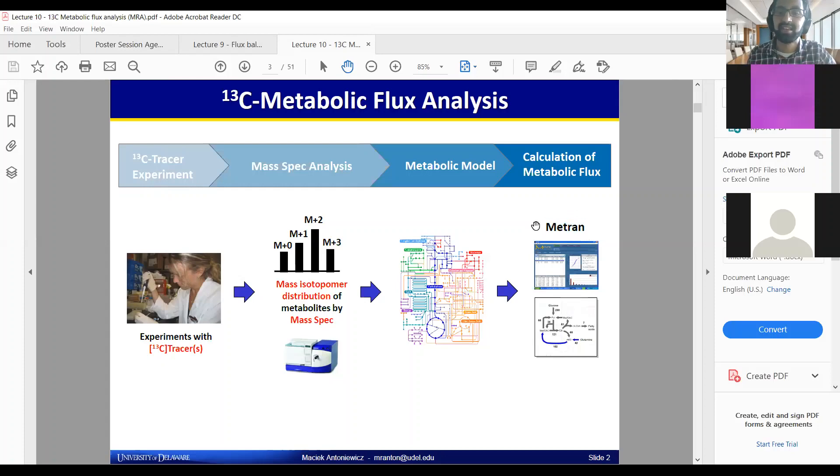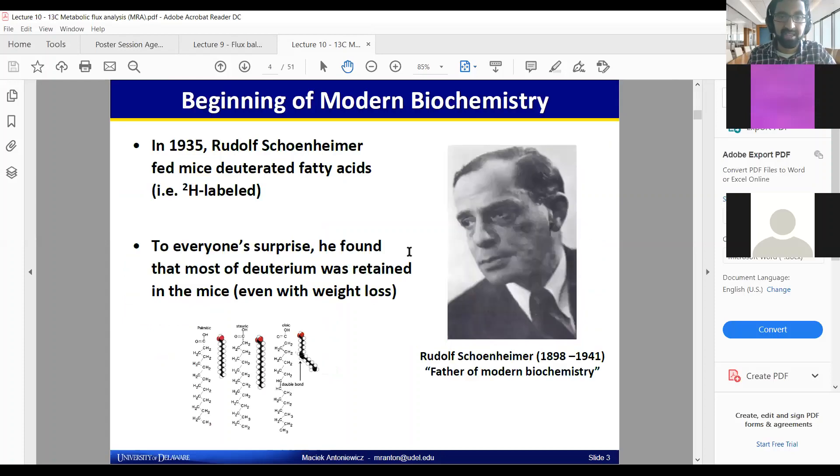This slide has some history. Some of it's pretty interesting, others a little bit less so. It's important to know that some of these methods have been around for a while. In the 1930s, pioneer Rudolf Schoenheimer started to feed mice isotopes.